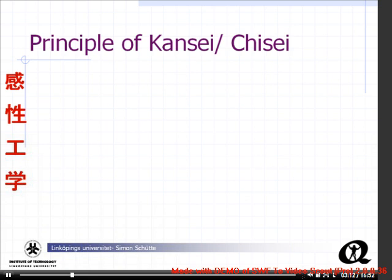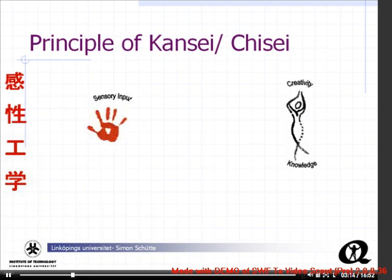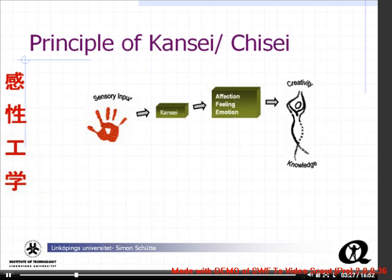How does Kansei Engineering work in principle? You have a sensory input on one side — it could be touch, smell, or often some type of visual impression. From that, your brain constructs some type of Kansei, some type of feeling, which leads to affection and emotion.